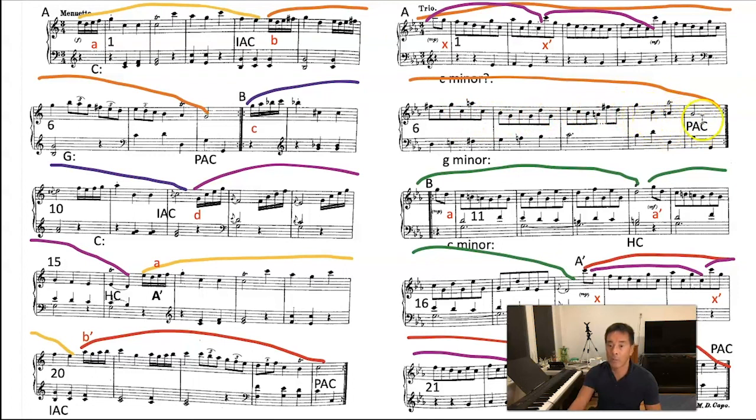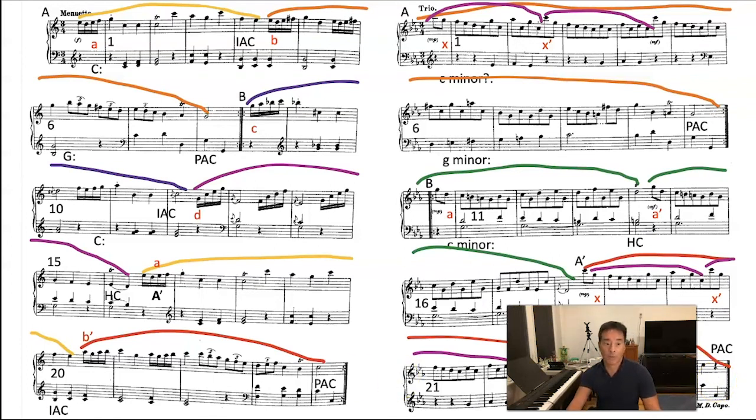Over here, steady eighth notes in the sentence until the very end. And notice, slower, slower, slower. And stop. Same thing here. Stop. Stop. And then here at the end, there's a little tiny stop here. And then another stop. But that helps you to recognize where the phrases begin and end. Those rhythms. And it ties it all together. What is the structure of the phrase relationship? Well, I went over that. So the two contrasting periods. The B section has two contrasting phrases. But they're not a period structure. In the trio, two sentences in the A. And the B is just a repeated phrase.